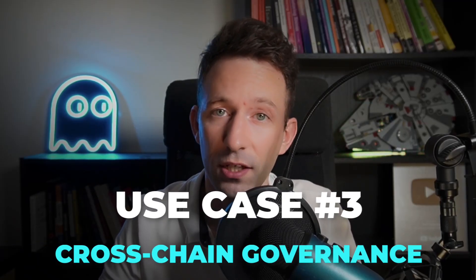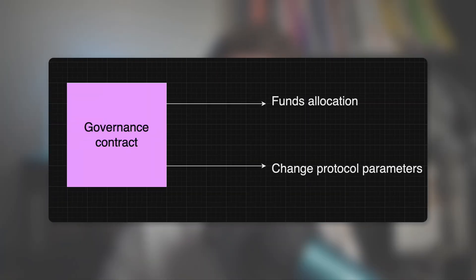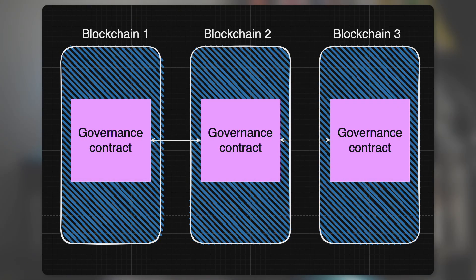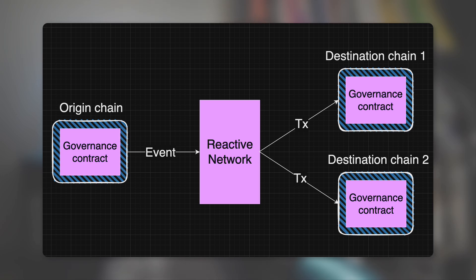Another use case is cross-chain governance. Blockchain protocols use smart contracts for their governance, performing important actions like fund allocation or changing protocol parameters. But many protocols are deployed on more than one blockchain, forcing them to keep governance consistent across blockchains using custom systems. With Reactive smart contracts, cross-chain governance is way easier — a Reactive smart contract can replicate governance events seamlessly from an original governance contract to one or several destination governance contracts on other blockchains.